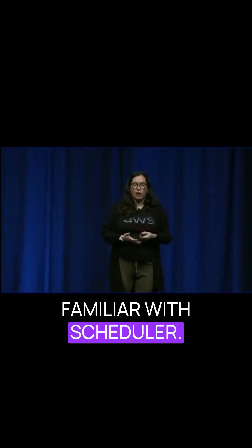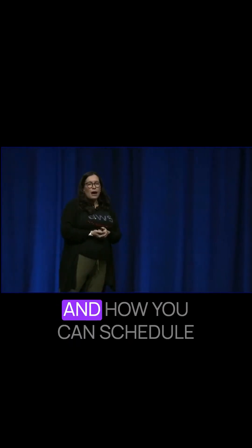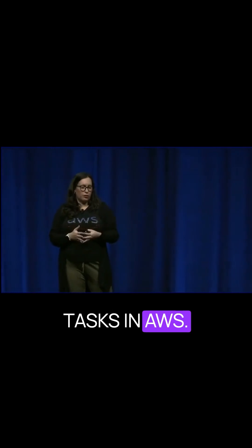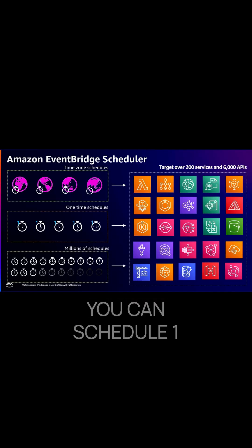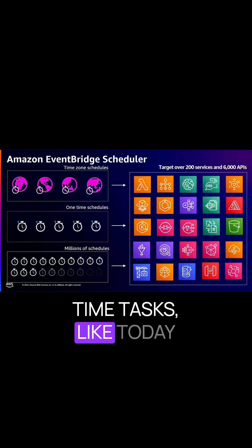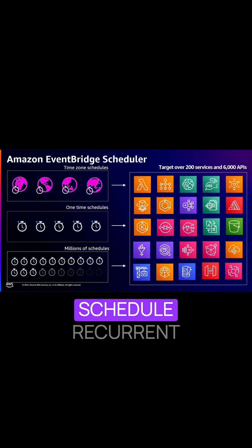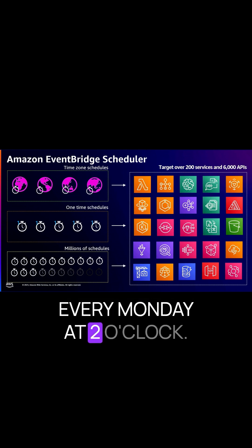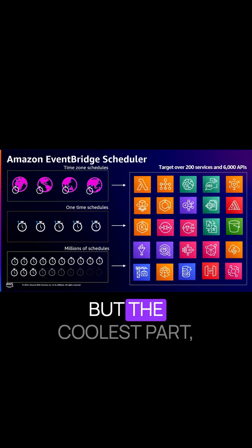I don't know if you're familiar with Scheduler as a service we announced last year and how you can schedule tasks in AWS. You can schedule millions of tasks — one-time tasks like today at three o'clock, or recurrent tasks every five minutes or every Monday at two o'clock. And you can even add time zones to it.